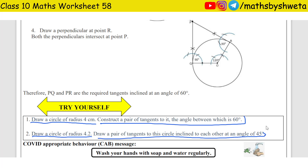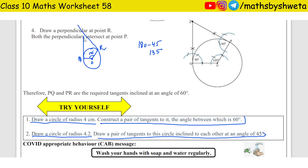Draw a pair of tangents to this circle inclined to each other at 45 degrees. So we minus 45 degrees from 180, giving 135 degrees. I draw the 135-degree angle at O, then from R I make a 90-degree perpendicular using a compass. Where they join, the tangent angle comes out to 45 degrees — because 90 plus 90 plus 135 equals 315, and 360 minus 315 equals 45 degrees.